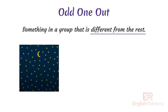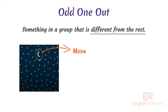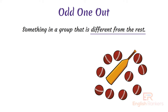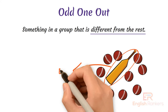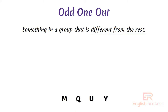There are many stars in the picture, but what is that? That's the moon. Moon is different from the others, so the moon is odd one out. Next example: there are many balls but one of them is a bat, so bat is the odd one out.